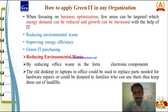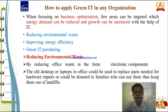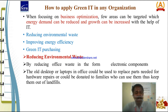How to apply green IT in an organization? When focusing on business optimization, a few areas can be targeted where energy demand can be reduced with the help of IT: reducing environmental waste, improving energy efficiency, and green energy purchasing. Regarding reducing environmental waste — by reducing office waste in the form of electronic components, old desktops or laptops in the office could be used to replace parts needed for hardware repair, keeping them out of landfill.